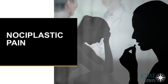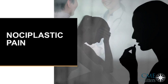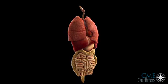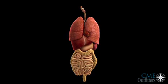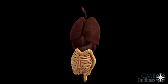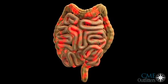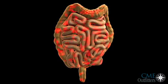The last group is nociplastic pain. This type of pain was only recently defined and describes the activation of nociceptors without any actual tissue damage — basically, the nociceptors are activated and we're not sure why. Conditions causing this type of pain include fibromyalgia, tension-type pain, restless leg syndrome, and irritable bowel syndrome, as shown here. There is no clear evidence of actual or threatened tissue damage, or any evidence for disease or lesion of the somatosensory system causing the pain. In this case, sensitization occurs not only within the gut but also in the nervous system.